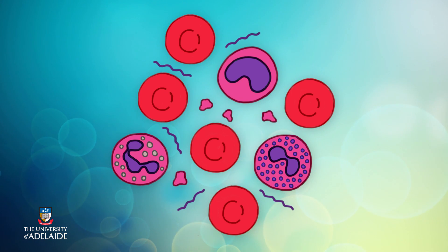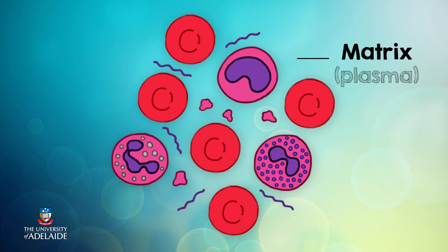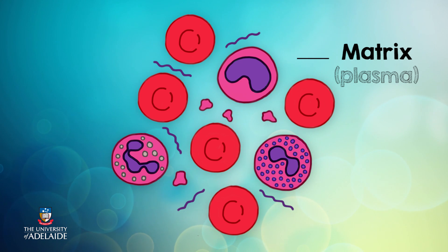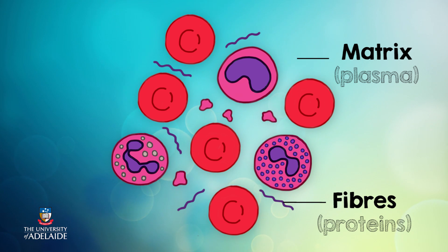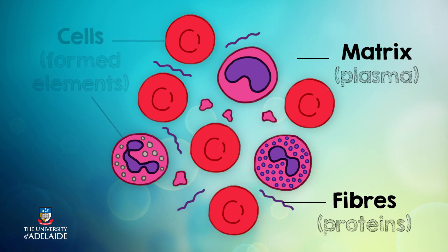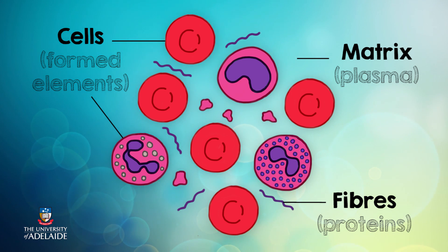Like all connective tissue, blood has an extracellular matrix, which in this case is a fluid. In blood, this watery fluid is called plasma. In this fluid, we have suspended proteins that can form fibres when needed. These fibres help blood to clot under special circumstances. Suspended in this plasma are blood cells or fragments of blood cells. Collectively, these are referred to as formed elements.